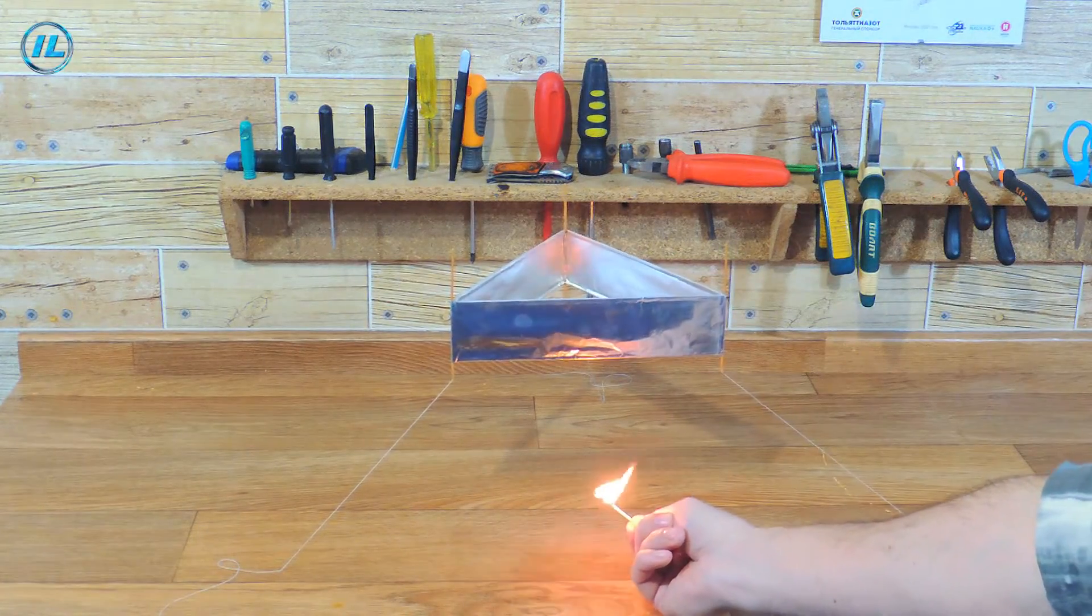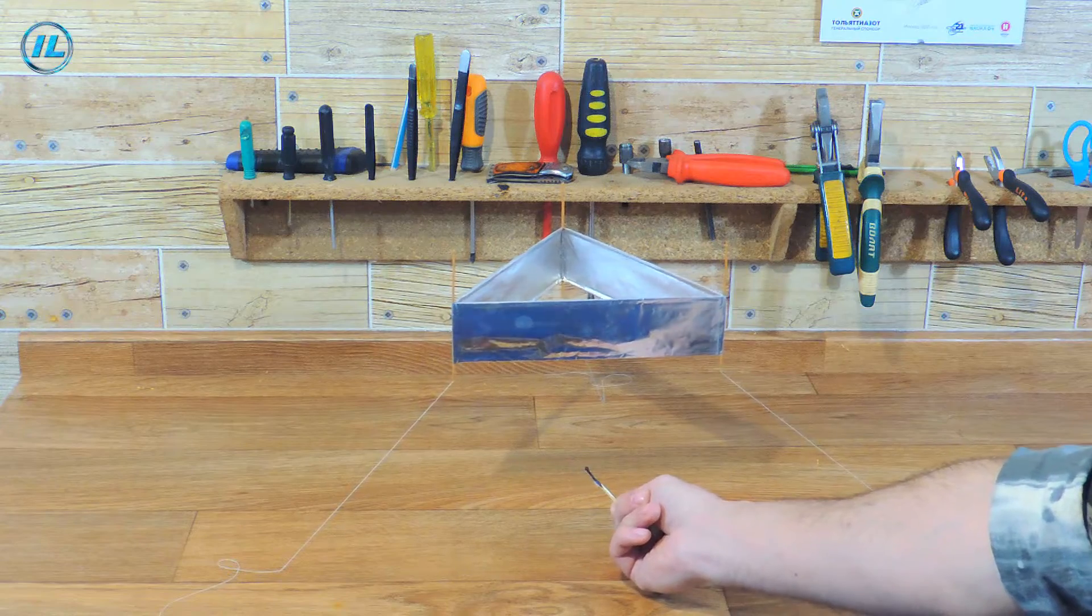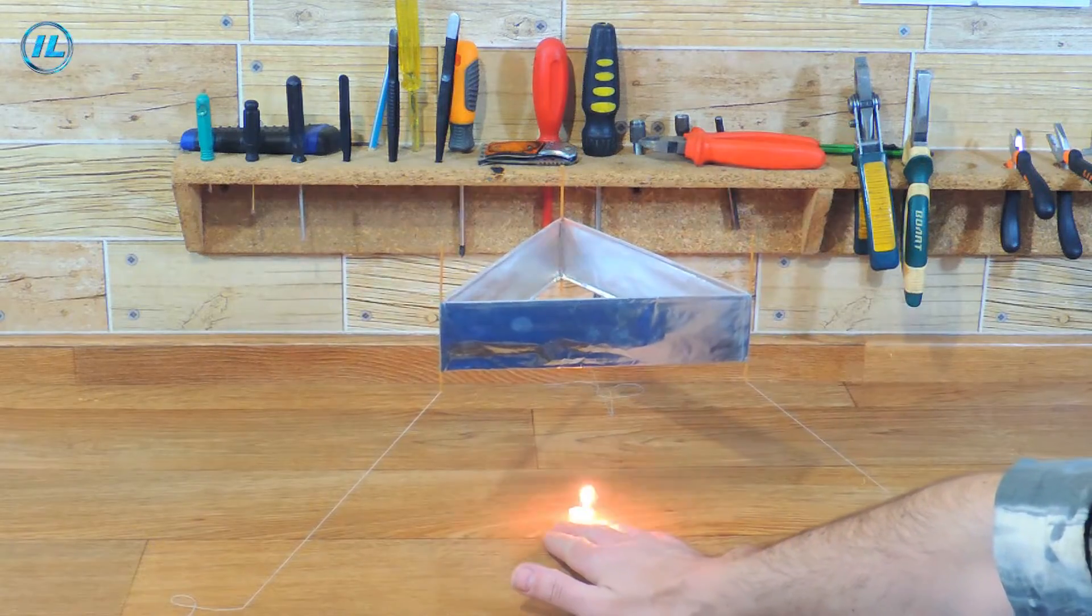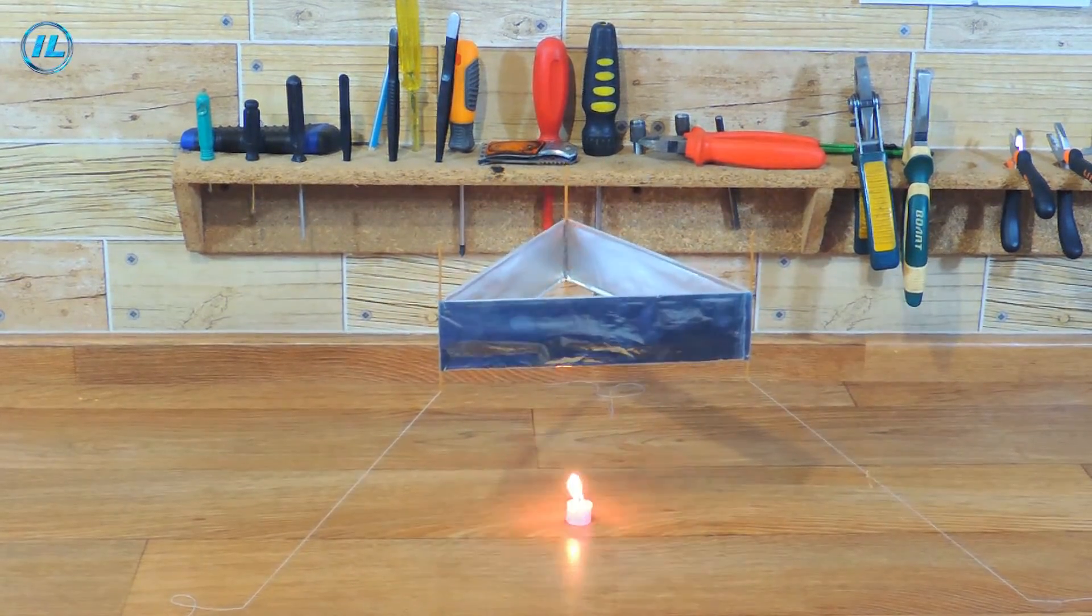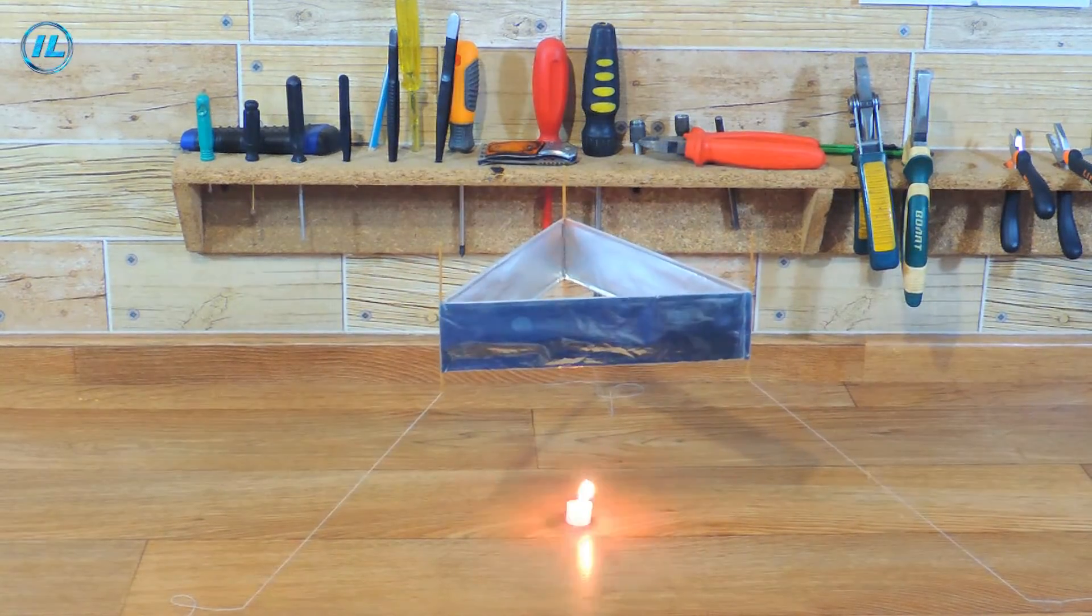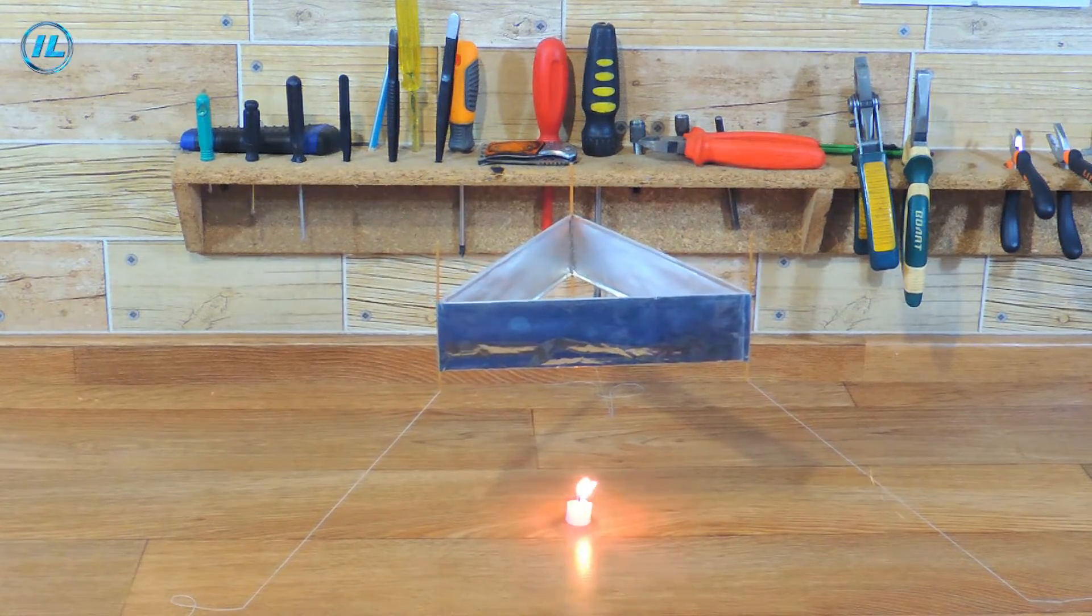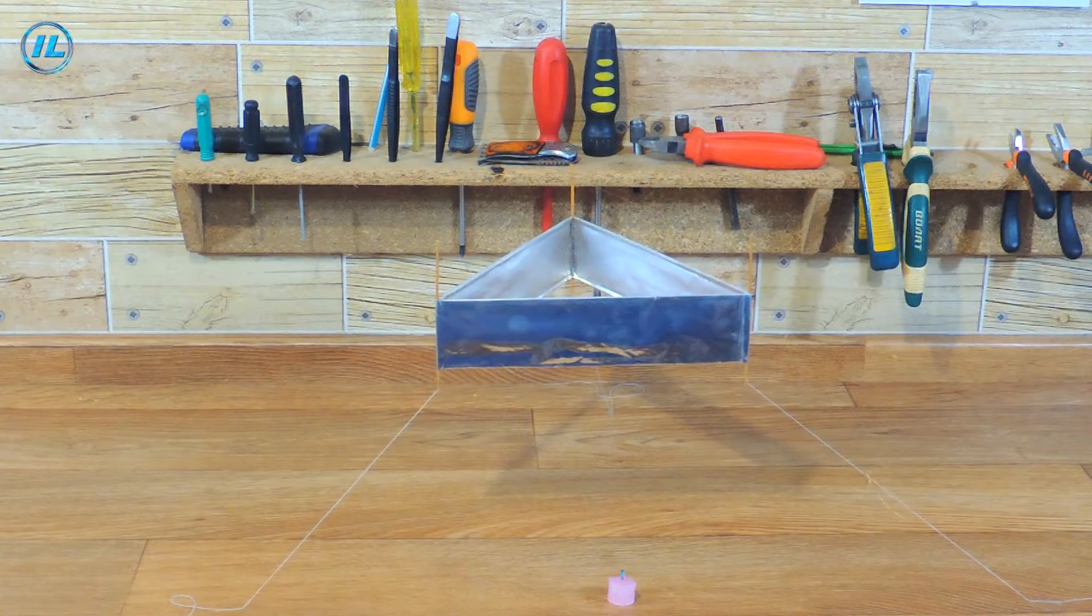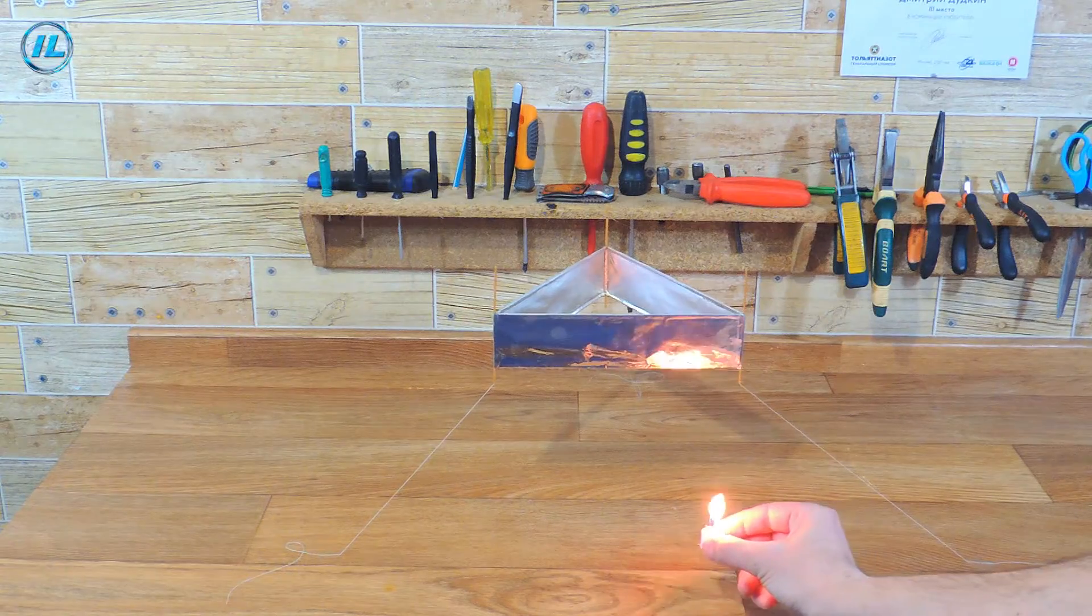There is a strong air movement around the Ionicraft. This is the so-called Ion Wind. It is so strong that it can easily extinguish a match or candle. Especially strong air movement is around the perimeter of the Ionicraft, just where the ions move from the upper electrode to the lower one.